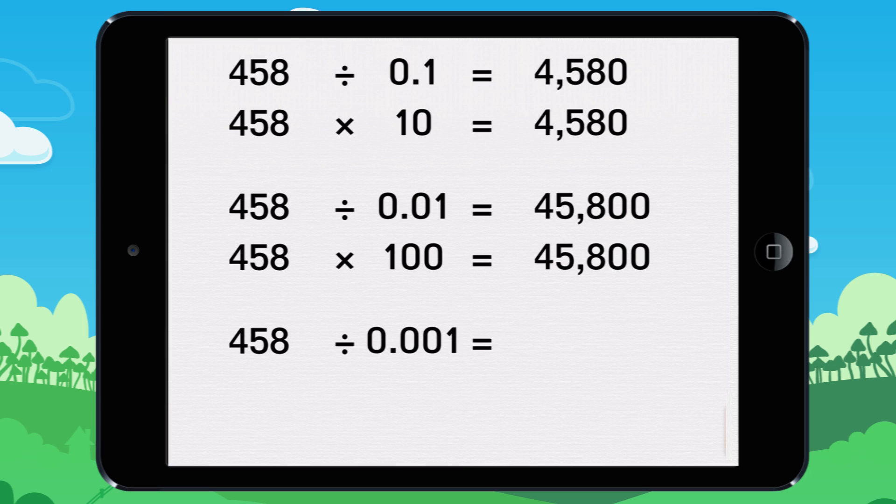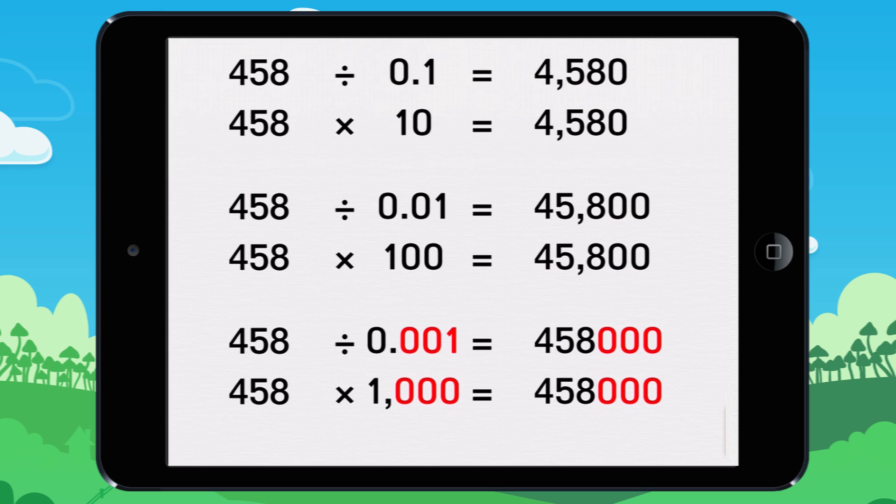To divide a number by 0.001, do the same thing as you did to multiply by 1,000. Write three zeros at the end of the number. 458 divided by 0.001 equals 458,000.